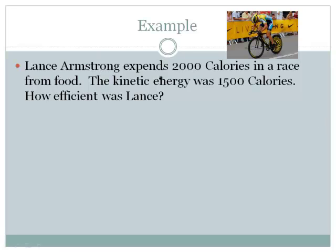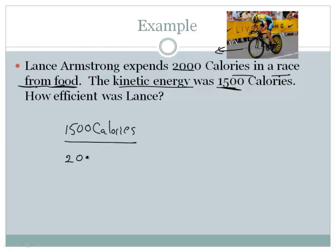Let's do an example. Lance Armstrong expends 2,000 calories in a race from food. So that's chemical potential energy. The kinetic energy was 1,500 calories. So he used, you measured how much energy while he was doing this race, and it was 1,500 calories. So you essentially would take 1,500 calories divided by 2,000 calories times 100. So that's 3 over 4, right? So that's 75%. So he'd be 75% efficient. I'm not sure that's an appropriate efficiency for a cyclist. It seems kind of high to me, actually.